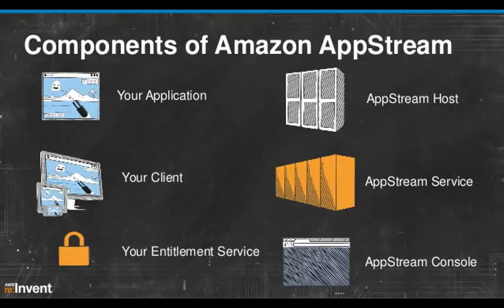AppStream 2.0 is available today in US East (N. Virginia), US West (Oregon), Europe (Ireland), and AP Northeast (Tokyo) regions. You can try the AppStream 2.0 end-user experience for free today with no setup required, by accessing sample applications already installed on AppStream 2.0. To access the Try It Now experience, log in with your AWS account and choose an app to get started.